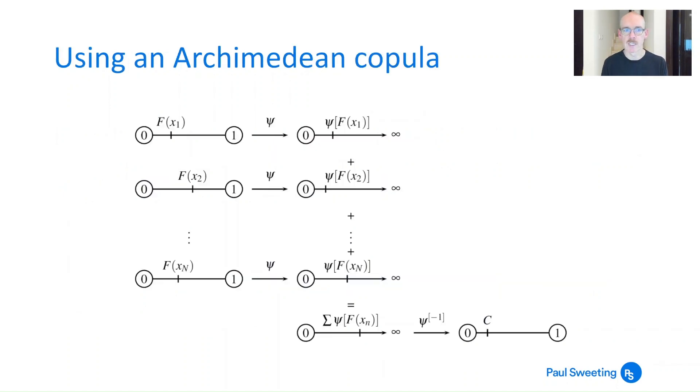This just shows what's happening graphically. F(x₁) apply the generator you get ψ(F(x₁)). F(x₂) apply generator you get ψ(F(x₂)) all the way up to F(xₙ), add all those together, sum them, use the inverse of the generator and that gives you your copula. So you start with something between 0 and 1, you end with something between 0 and 1.